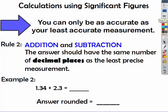When you're adding and subtracting, the answer should have the same number of decimal places as the least precise measurement. So if we add 1.34 plus 2.3 in the calculator, you get 3.64. We have two numbers after the decimal and one number after the decimal. So our answer should only have one number after the decimal or just 3.6.